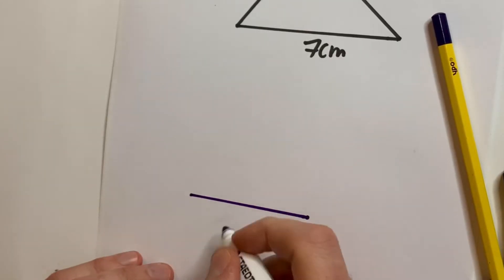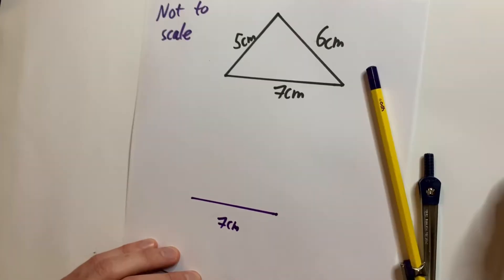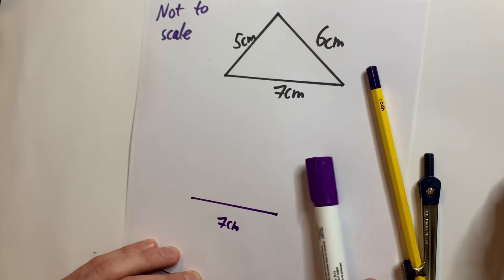That's the easy bit. We've got that line there of seven centimeters. Now, this is where it gets a bit more tricky.